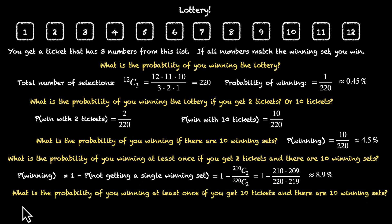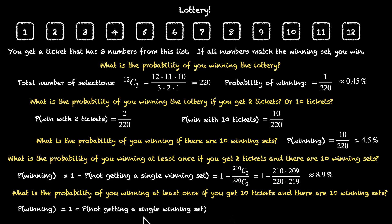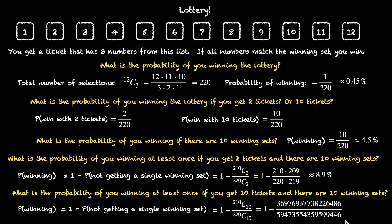Here's the last problem of this set. What is the probability of us winning at least once if we get 10 tickets and there are 10 winning sets? We realized there are 10 winning sets and wanted to get lucky, so we bought 10 tickets. P(winning) = 1 − P(losing) = 1 − P(not getting a single winning set), meaning all 10 tickets lose. The number of losing tickets is 220 − 10 = 210. So this becomes 1 − (210C10 / 220C10). Simplifying gives approximately 37.8%. So when there are 10 winning sets and we pick 10 tickets, the probability of winning at least once is a significant 37.8%.